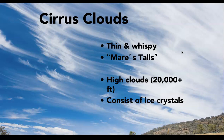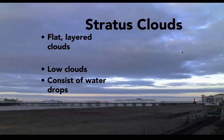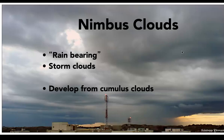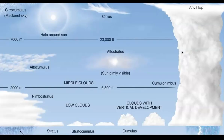So to recap: cirrus — thin and wispy clouds. Stratus — layered. Cumulus — fluffy cotton balls. Nimbus — storm clouds. And I guess I saved my cumulonimbus picture for when we talk about precipitation.